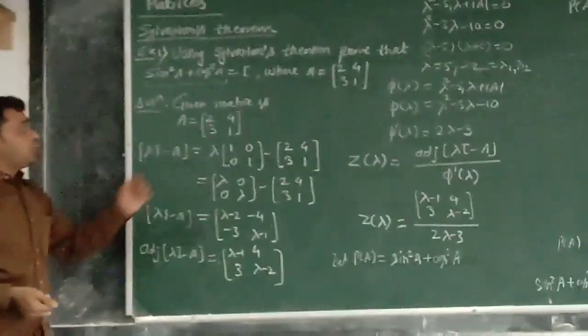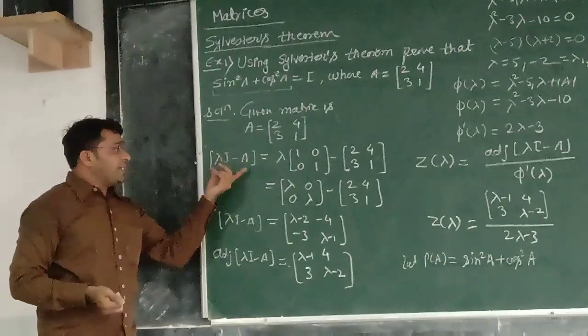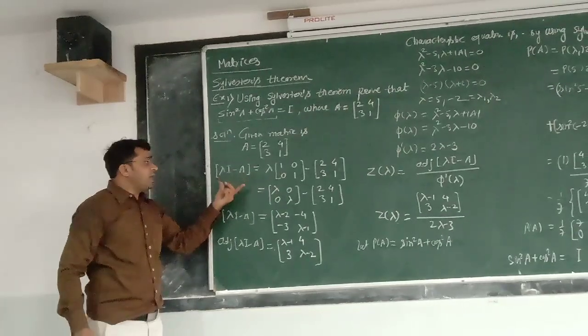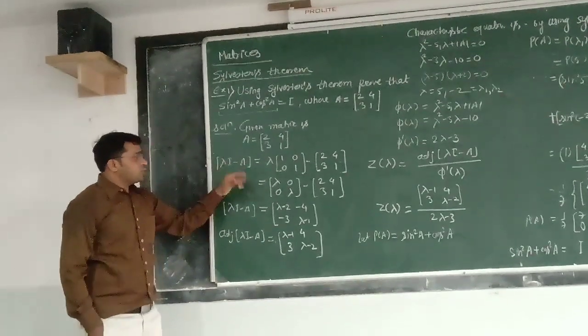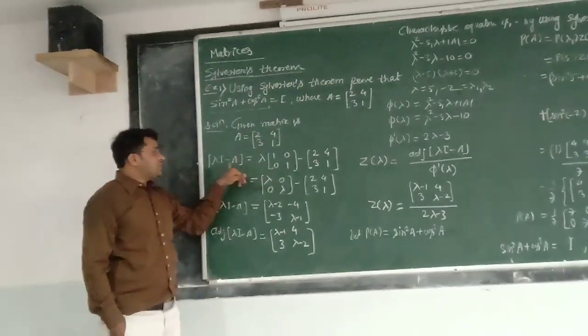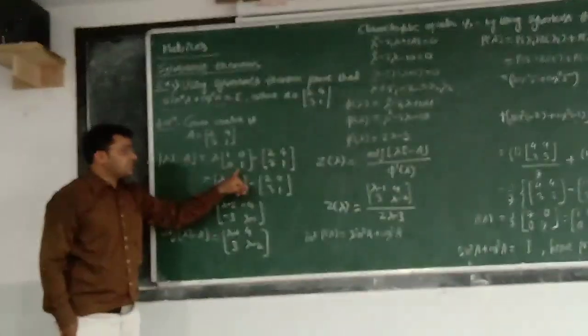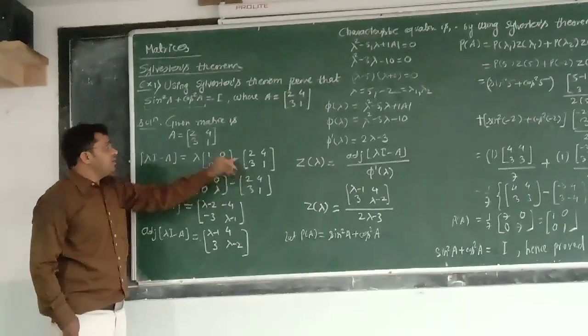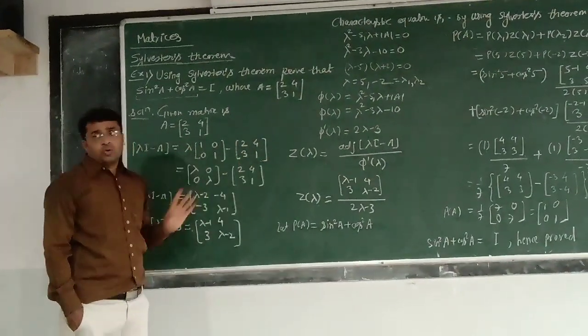Now, first job is to find out the matrix lambda I minus A. While solving the example of Sylvester's, after all we have to say, lambda I minus A. So lambda is a scalar, I stands for the identity matrix, which is having the same order as that of the A, and then minus, we are having this A, 2, 4, 3, 1.